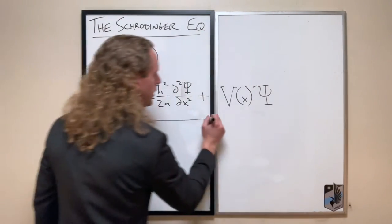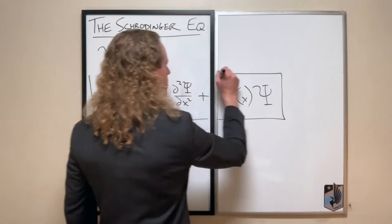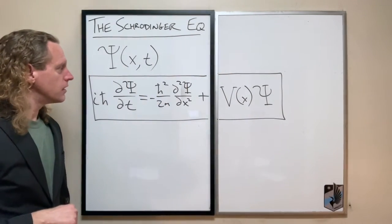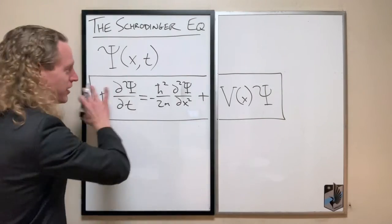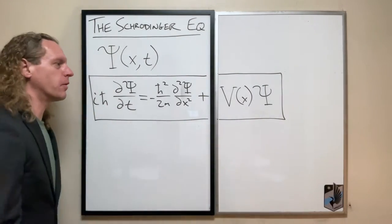I'll have to move over here, something called V of x times Psi. So I guess I lied just a little bit.